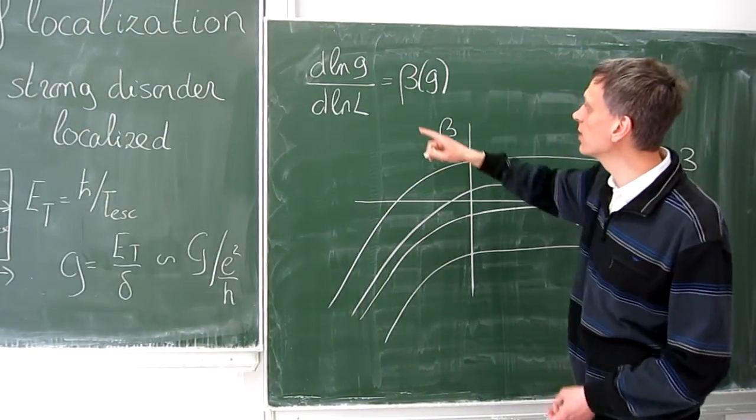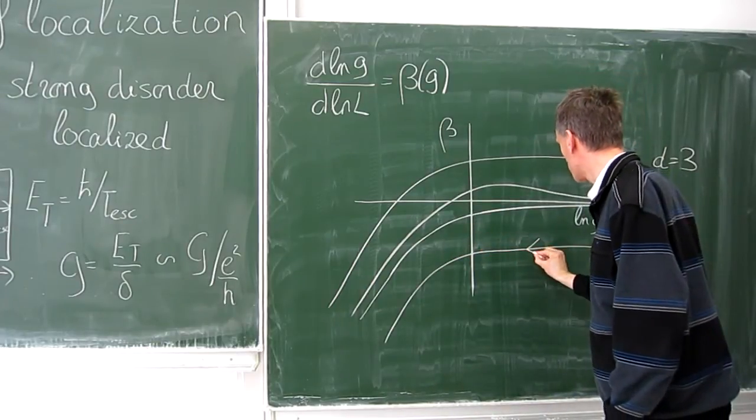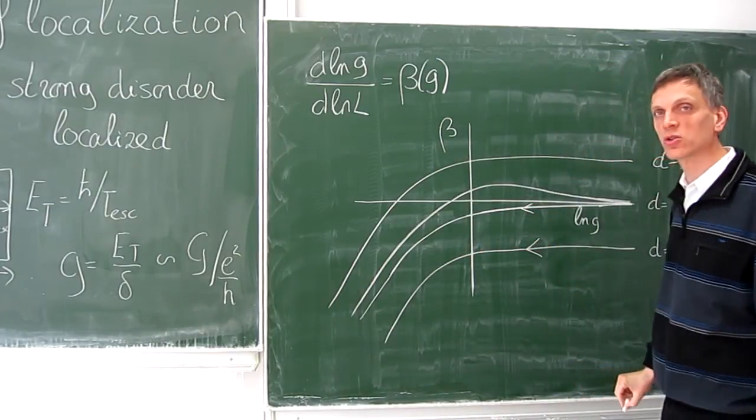Because if beta is negative, g becomes smaller if system size increases. So the flow is towards small g.